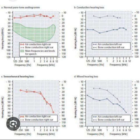Meniere's disease is characterized by episodes of a triad: vertigo, tinnitus, and fluctuating hearing loss in one ear; a sensation of aural fullness may also be associated. Meniere's disease most commonly presents as a unilateral sensorineural hearing loss most severe in the low frequencies. The audiogram shows an upsloping shape, which may become flat in later stages depending on disease progression. Over time, 5 to 50 percent of patients will develop bilateral involvement.